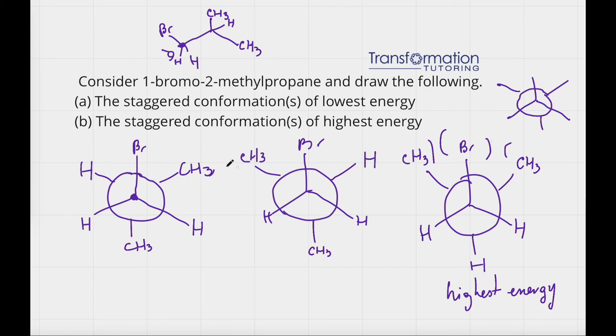These two, we have bromine bumping into the methyl group. But at least one of the methyl groups is further away. So these will be the same in energy because they have the same kind of configuration. And they will be lowest energy.